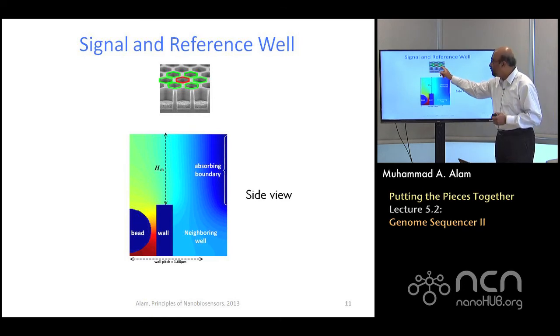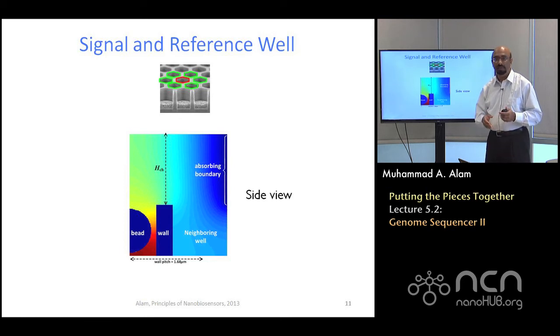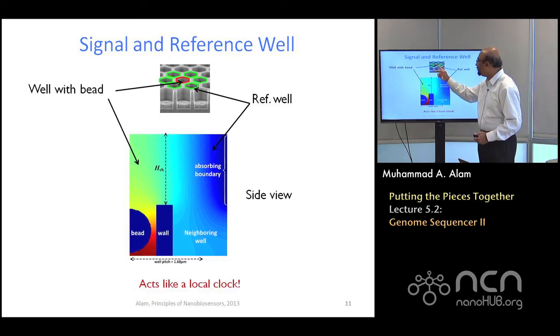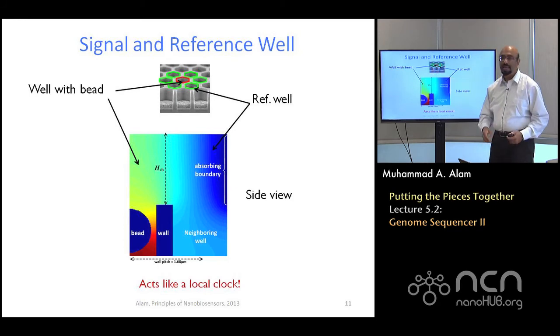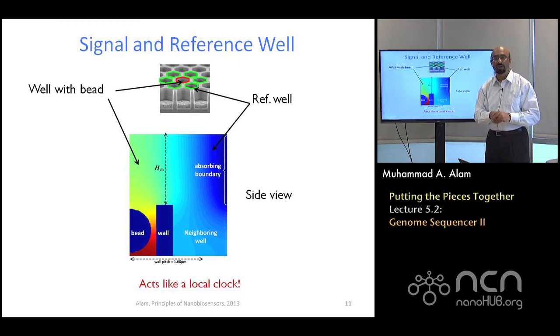You put them in the red well. Now the red well must be surrounded by a set of empty wells. These wells must be empty so that you can compare the signal coming from the red, which contains the bead, versus the signal which is coming from the empty well so that you can locally differentiate the signals. Therefore, this is very important that each loaded bead is surrounded by empty beads. This will be like a local clock. As the solution is running by, it will generate a signal here, will not generate any signal here. When you take a local difference of the signals, then the signal-to-noise ratio will be very good. Selectivity will be very good.